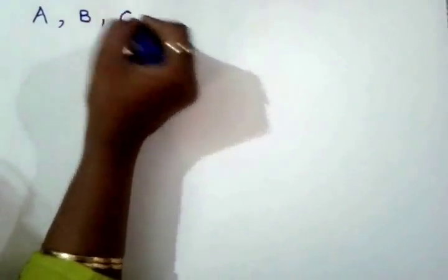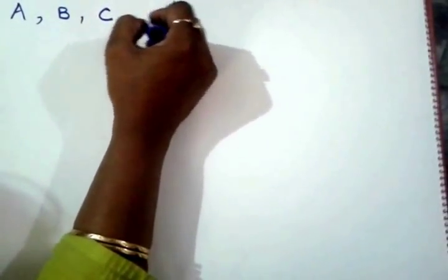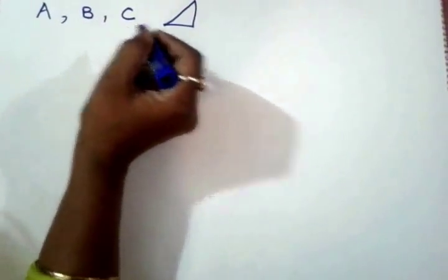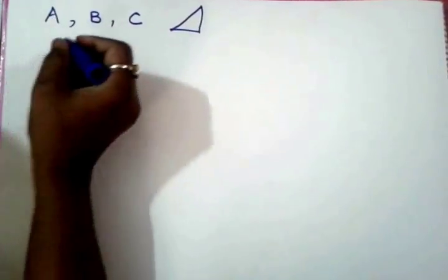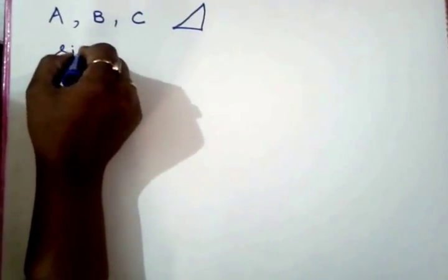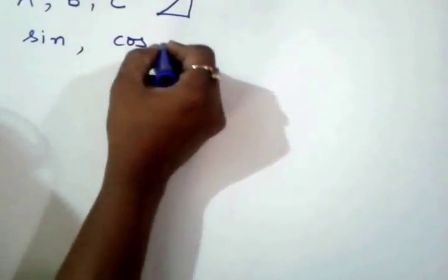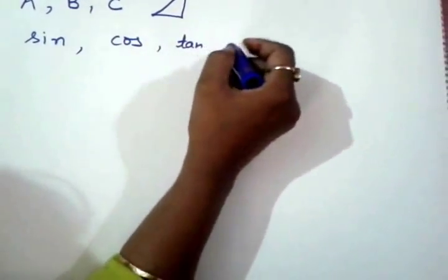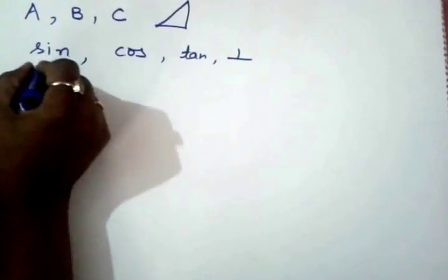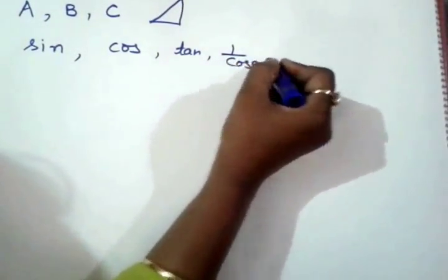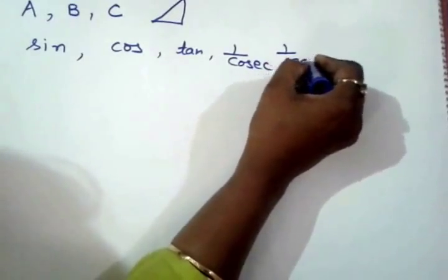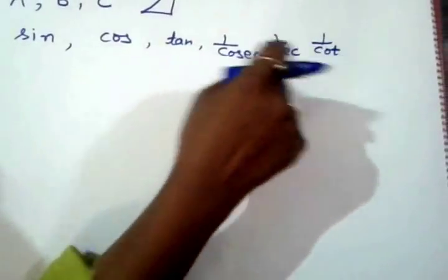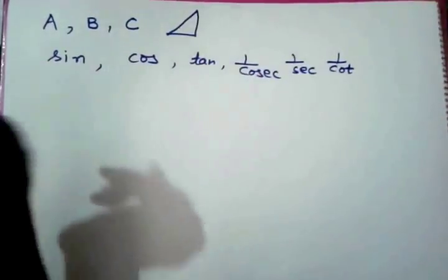Why triangle? Because a right angle triangle always has three angles. So three angles are A, B, C. Trigonometry consists of the functions sine, cosine, tangent, and then the reciprocals of these: cosecant, secant, and cotangent. Mainly, trigonometry revolves around these functions.